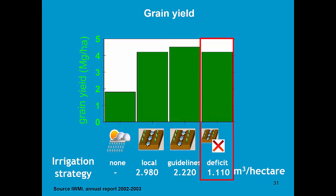Experiments showed that with half of the water, with only 1110 cubic meter per hectare, farmers still can get a relatively high yield, which is lower than for full irrigation, but still gives a high yield.